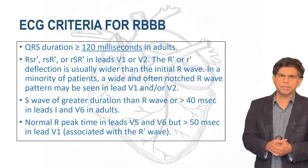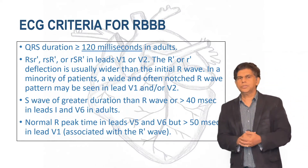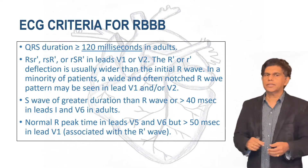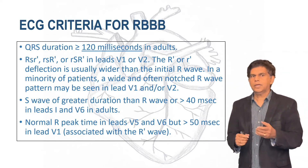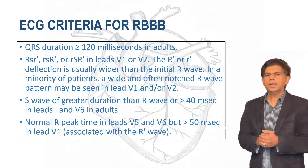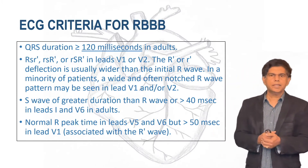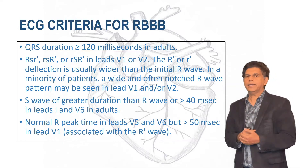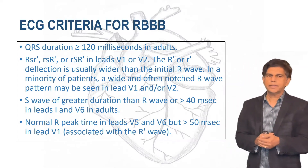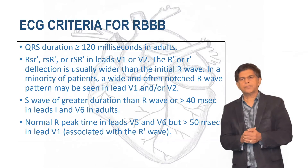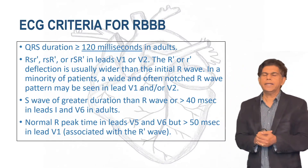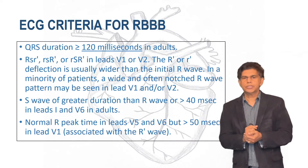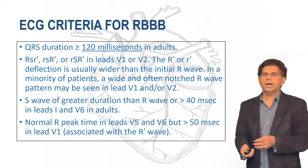The most important thing is the EKG criteria for right bundle branch block. The QRS duration must be greater than or equal to 120 milliseconds in adults. You also see an RSR prime pattern in lead V1 or V2, where the R prime is usually wider than the initial R wave. In a minority of patients, a wide and often notched R wave pattern may be seen in leads V1 and V2. The S wave duration must be greater than the R wave, or greater than 40 milliseconds, in leads I and V6. Normal R peak time in leads V5 and V6, but greater than 50 milliseconds in lead V1 when associated with an R prime wave.